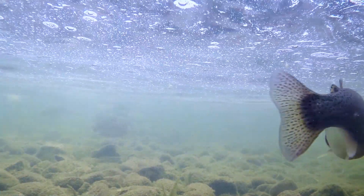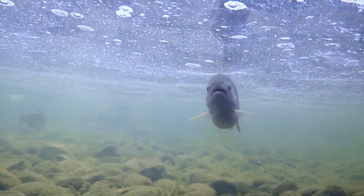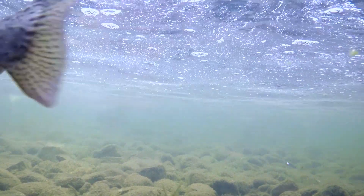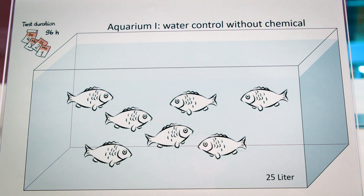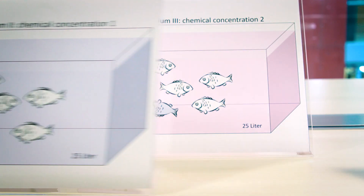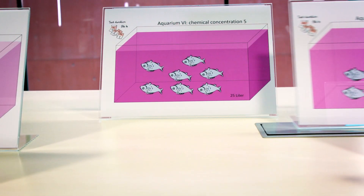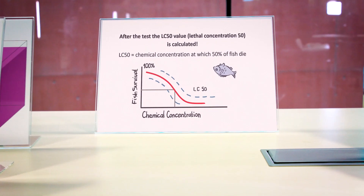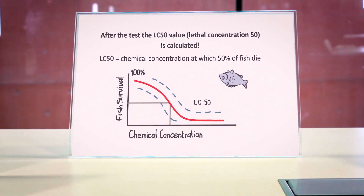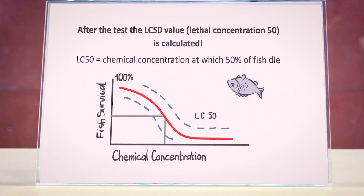One of the most widely used tests is the so-called acute fish toxicity test. In this test, fish are exposed in aquaria to increasing concentrations of the test chemical or the sample. After four days, you go there and count how many fish have died, and you use this information to calculate the concentration which kills 50% of the fish.